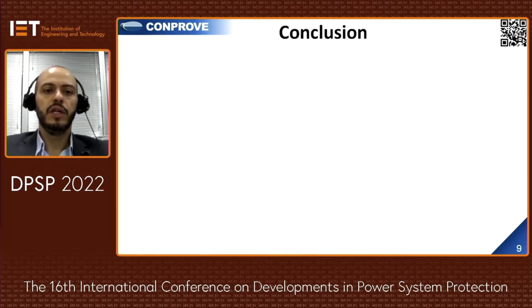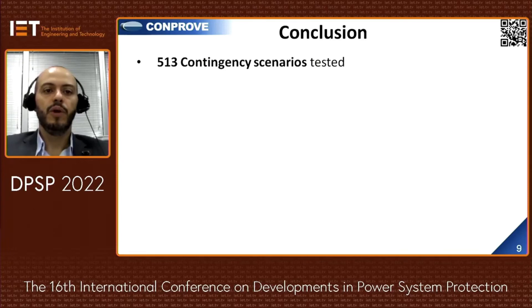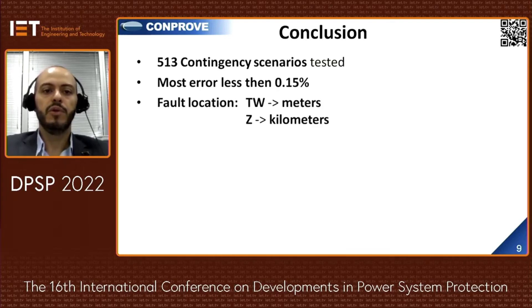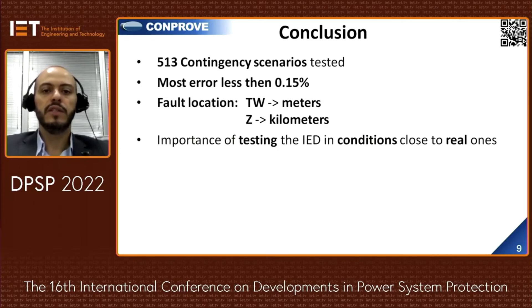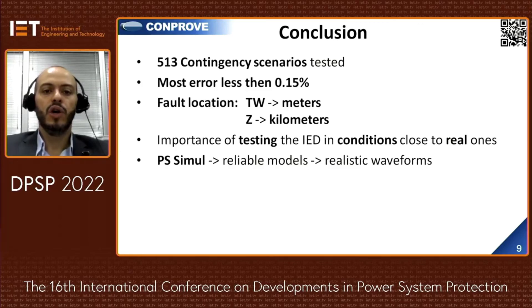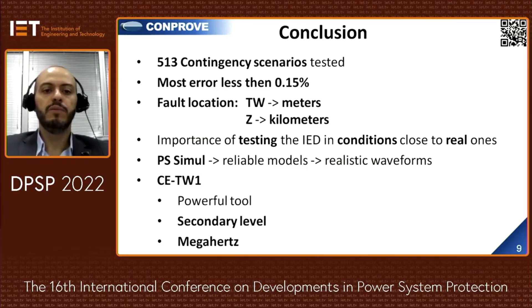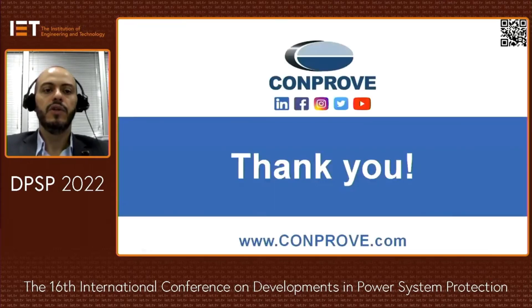Conclusions: 513 test injections were performed. Most location errors in meters were less than 0.15%. TW location errors are on the order of meters, while impedance methods reached the order of kilometers. It is very important to test the IED under real conditions. The power system simulator, with reliable models of electrical system components, results in realistic waveforms. The CETW1 proved to be a very powerful tool due to its ability to generate voltage and current signals at the secondary level in megahertz. Thank you for your attention.